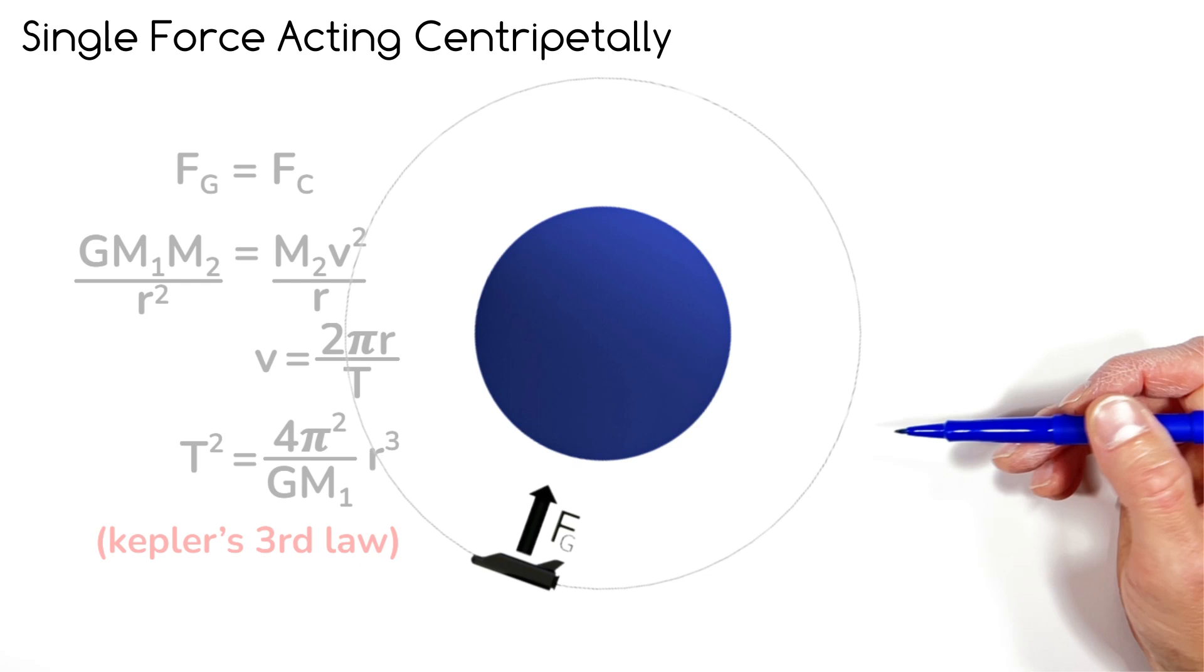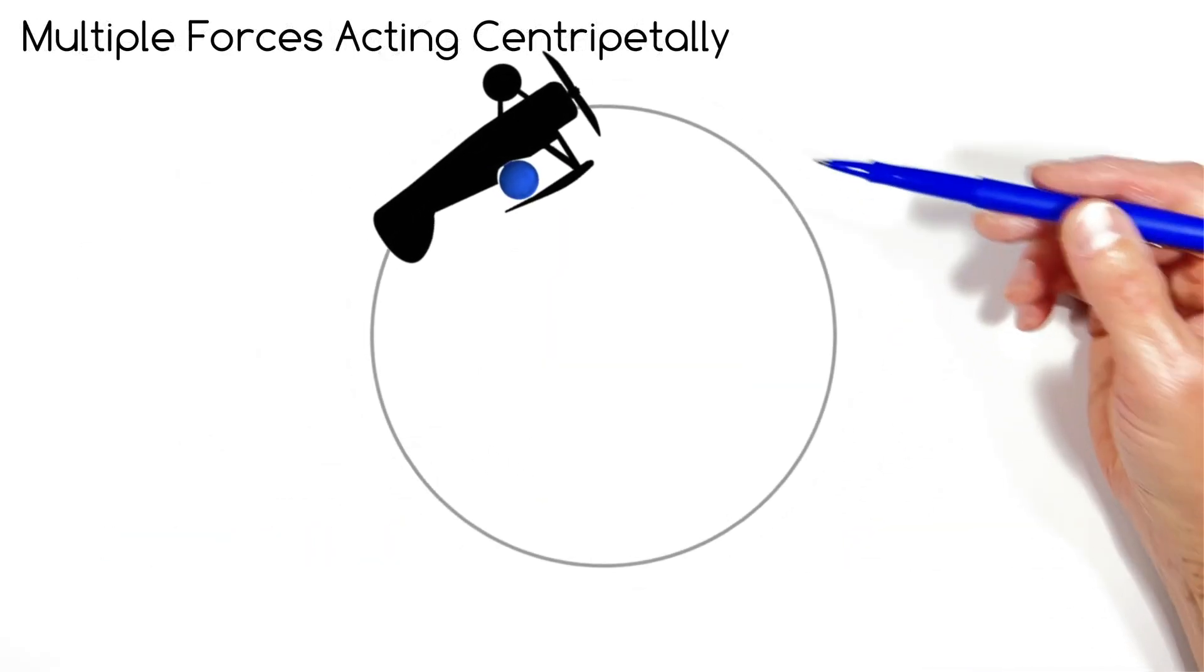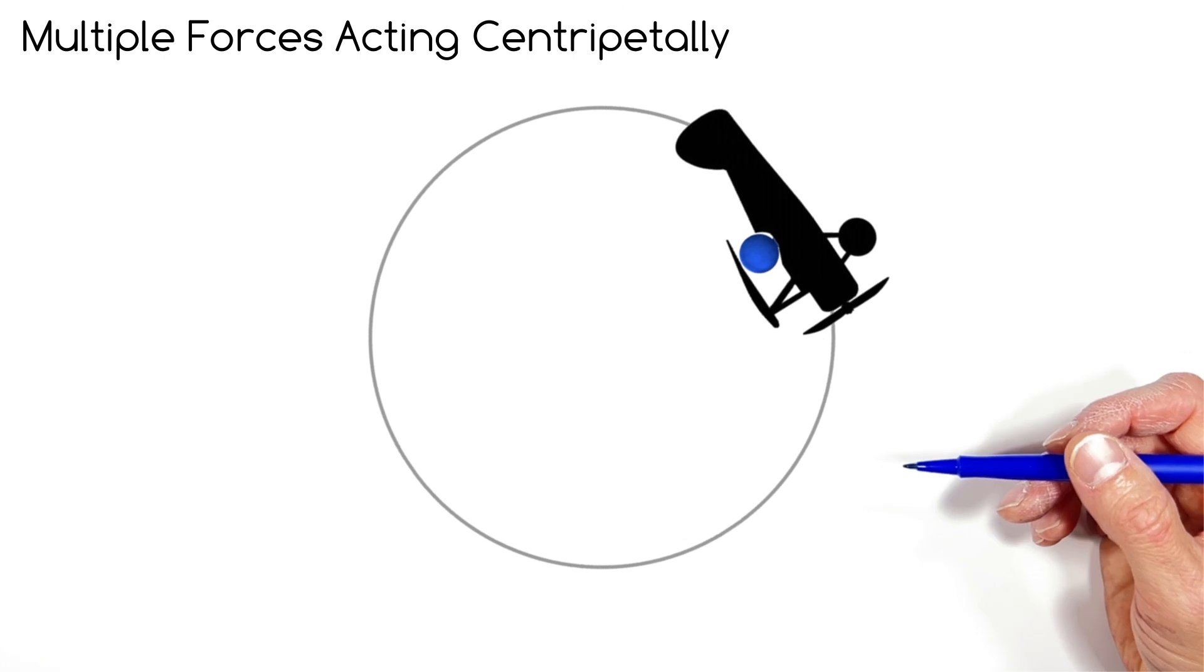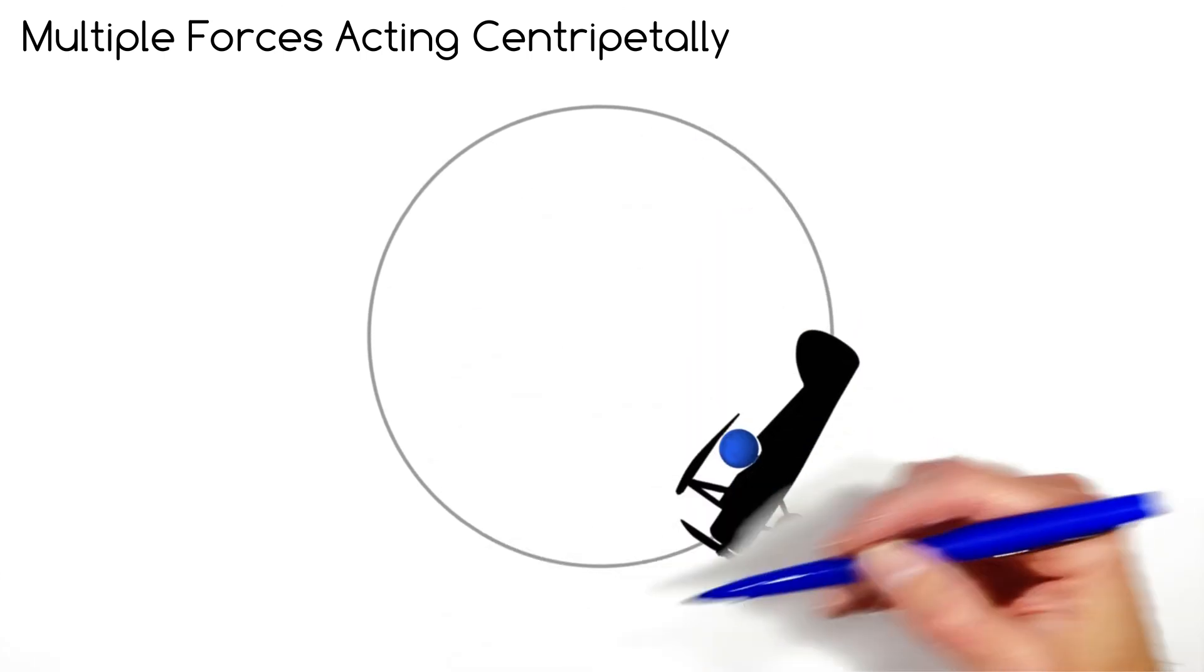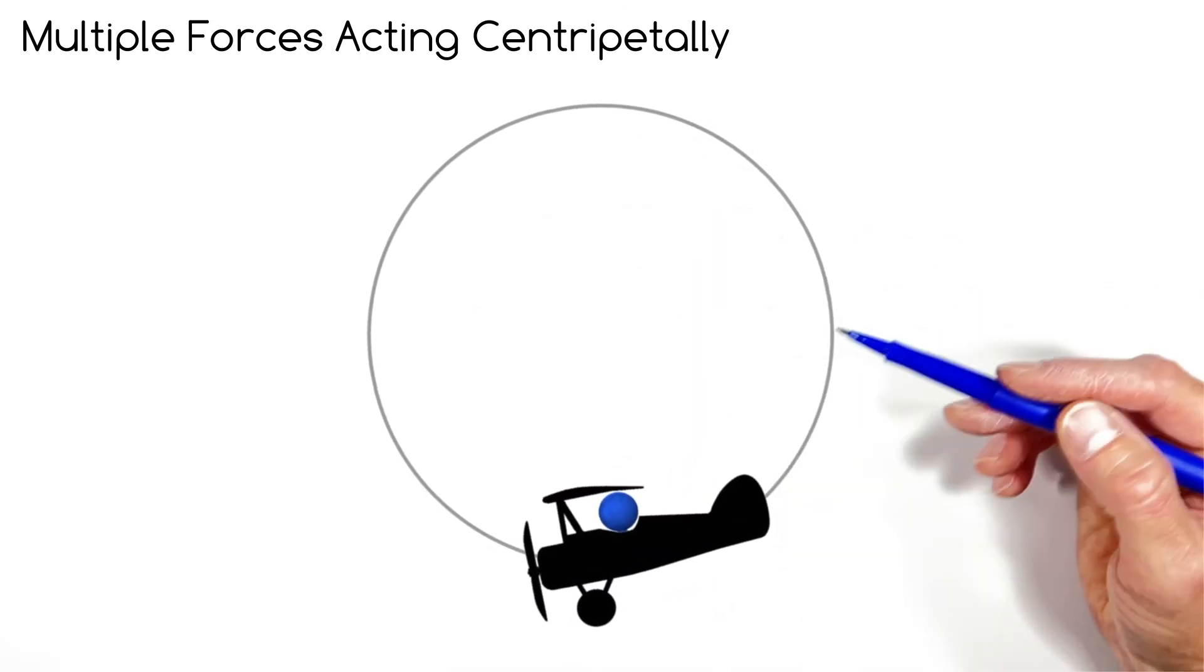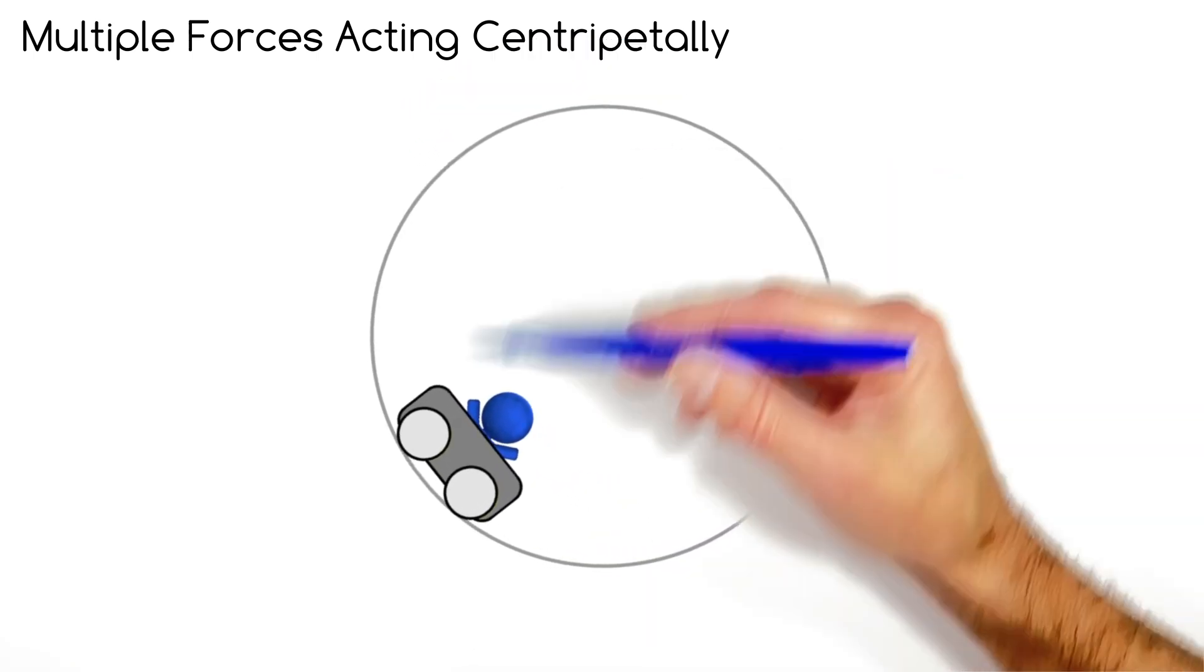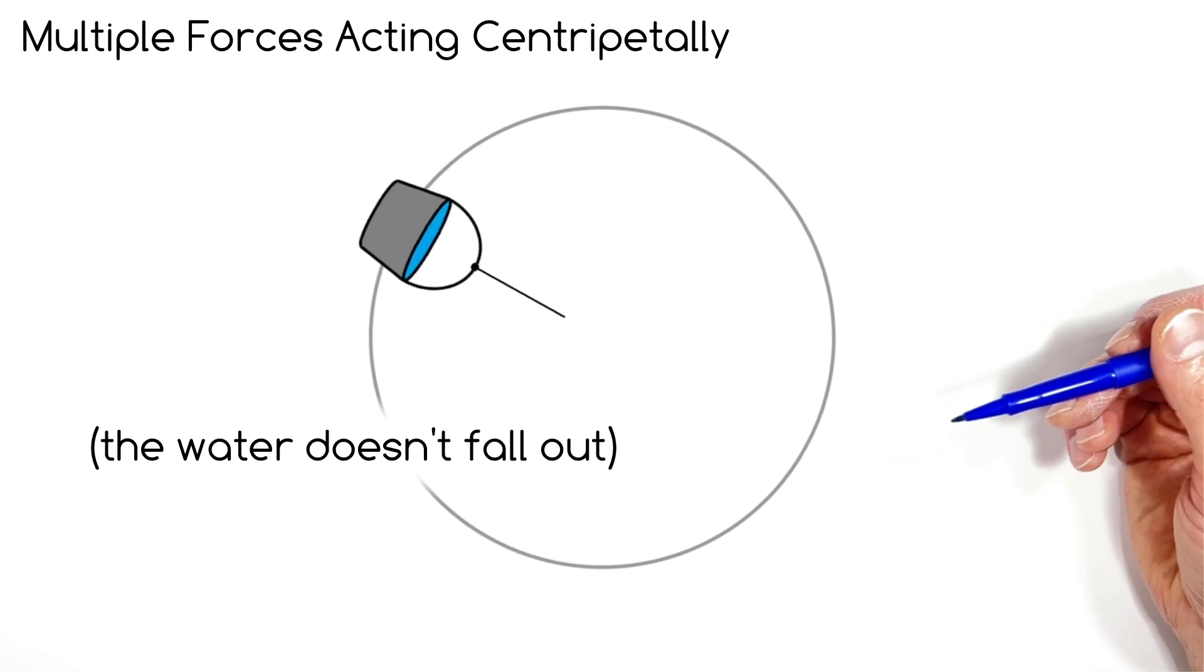But where people get stuck is when there's multiple forces acting on an object that's going through circular motion. In introductory physics, this usually comes up when we make some object move in a vertical circle. So typically that'd be a car, an airplane, a roller coaster, or my favorite, a bucket full of water, mostly because that makes a pretty good demo in class.